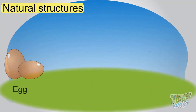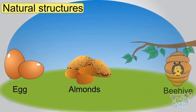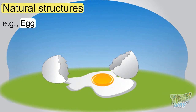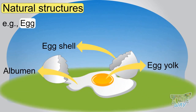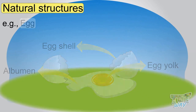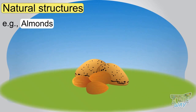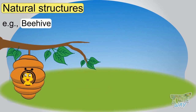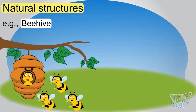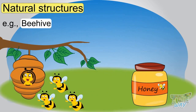Now here are common natural structures. Egg is a natural structure that has the egg yolk and albumin inside. Almond is a natural structure — we break it to eat the nut. Beehive is a natural structure made by honeybees to store honey.